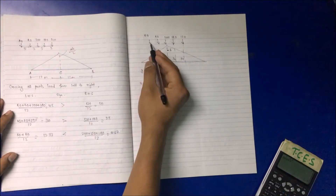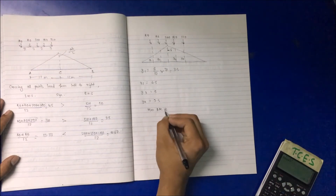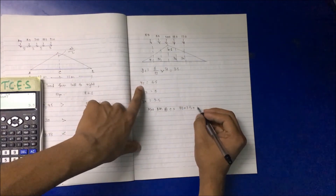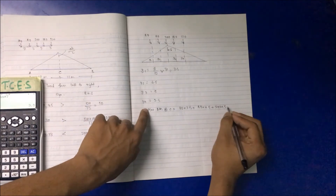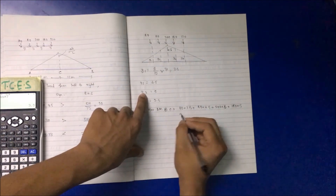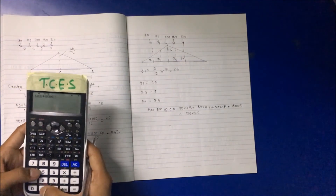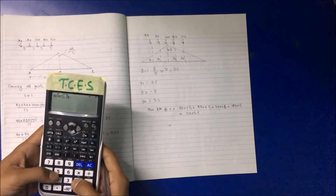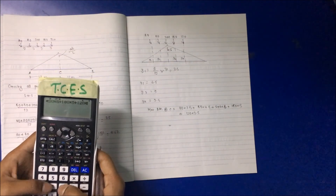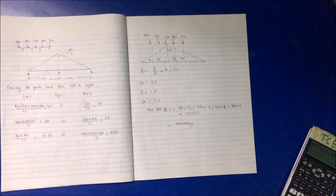Now, multiplying each point load by its corresponding perpendicular ordinate gives the maximum bending moment at section C: 80×3.5 + 80×4.5 + 200×6 + 180×5 + 120×3.5 = 3160 kN·m. This is the maximum bending moment at section C, and this is how maximum bending moment is calculated using the ILD.